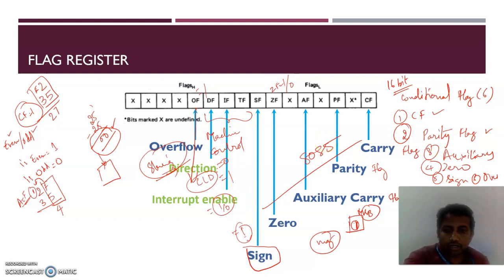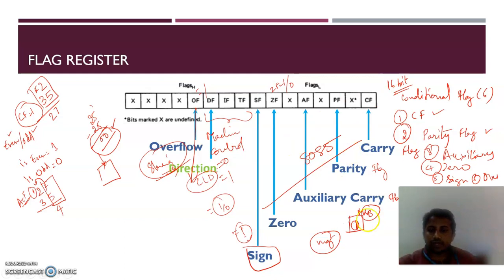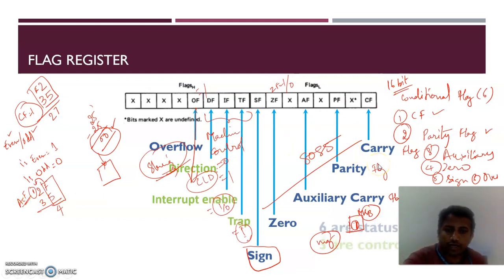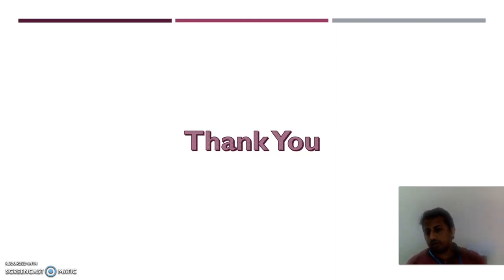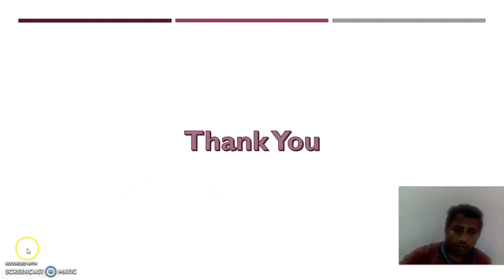So this is the 8086 microprocessor flag register, which has six conditional flags and three control flags. Thank you — if you have any questions, you can clarify by leaving comments on the video. Thank you everyone.